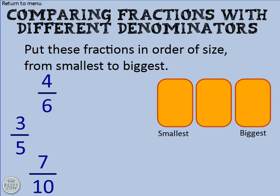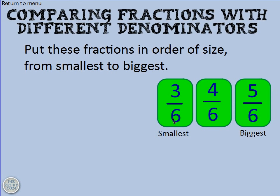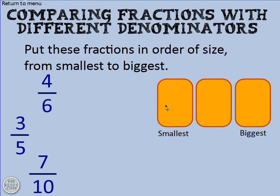So we've got four sixths, three fifths, and seven tenths. What I need to do is convert each of these fractions into an equivalent fraction that shares the same denominator, because then it becomes easy to compare — just like when all the denominators are the same. Let's turn these into fractions that all have the same denominator.